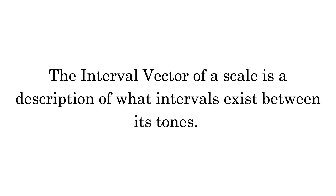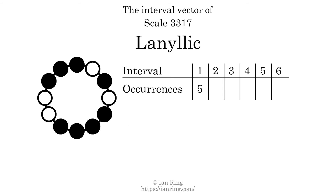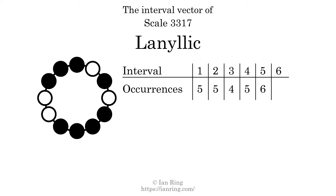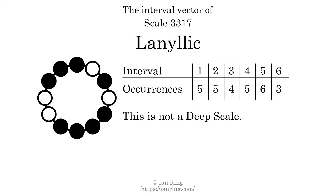The interval vector of a scale is a description of what intervals exist between its tones. There are 5 intervals of 1 semitone, 5 intervals of 2 semitones, 4 intervals of 3 semitones, 5 intervals of 4 semitones, 6 intervals of 5 semitones, and 3 intervals of 6 semitones. Each interval does not appear in this scale a unique number of times, so this is not a deep scale.